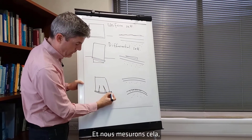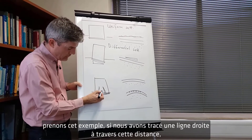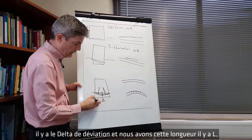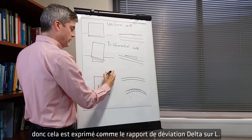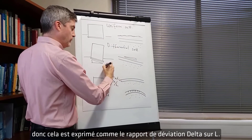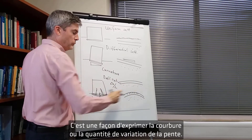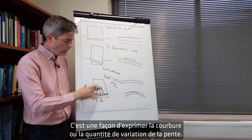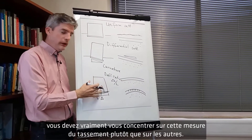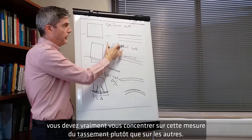And we measure that. If we drew a straight line across there, that distance is the deflection delta, and that length is L. So that is expressed as the deflection ratio delta over L. That is one way to express the curvature or the amount that the slope is changing. So if you want to avoid damage to a pavement or a building, you really need to focus on this measurement of the settlement rather than the others.